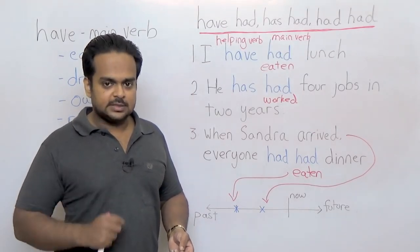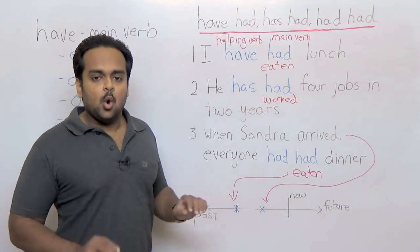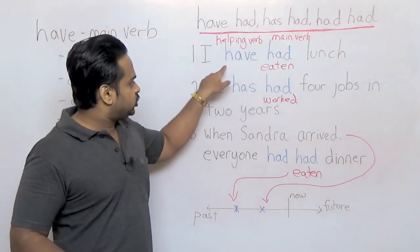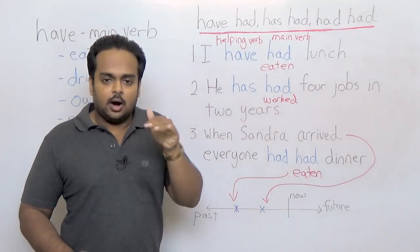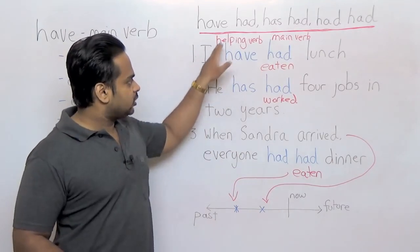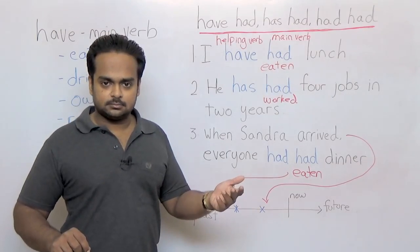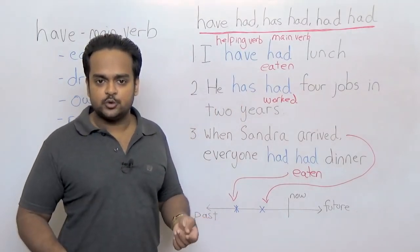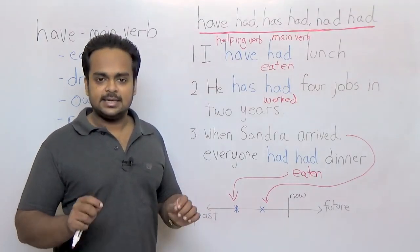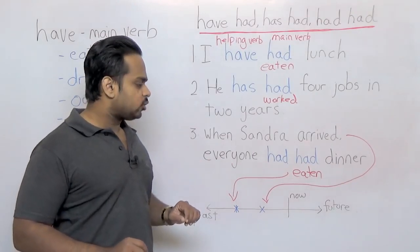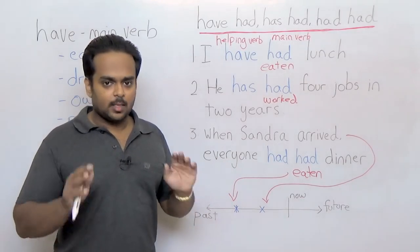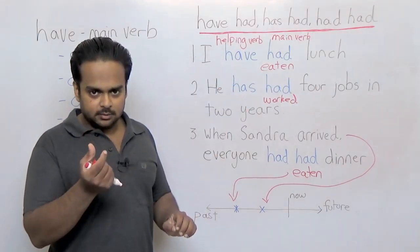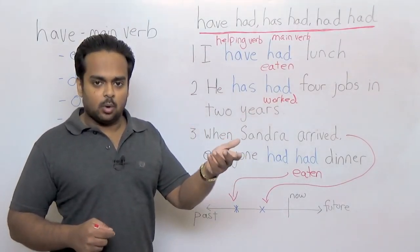Now the second thing is pronouncing these sentences. When we say any of these sentences, we do not stress the first HAVE but we stress the second. So this sentence, we would shorten this HAVE to I've. So I've had lunch. We do that because this first HAVE is not important. So I've had lunch. In the second example, he's had four jobs in two years. He's, he's had four jobs in two years. It sounds like he is but it's actually he has. And in this last example, when Sandra arrived, everyone had HAD dinner. Listen to that very carefully. Everyone had HAD dinner. The first one is weak – HAD. And the second is strong – HAD. So everyone had HAD dinner.